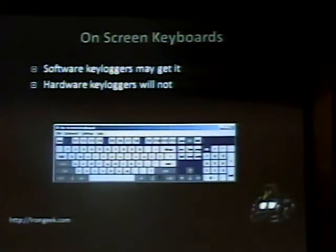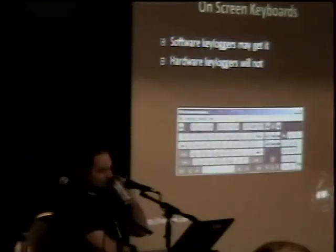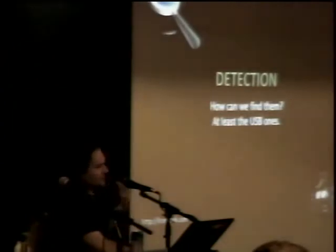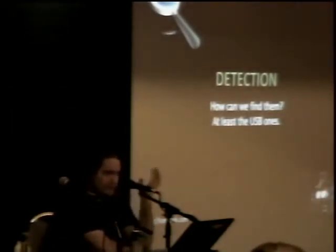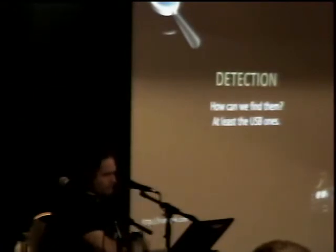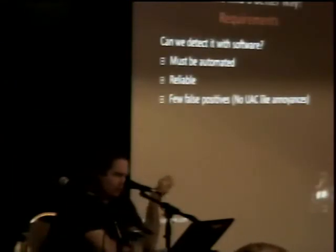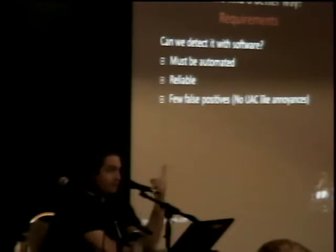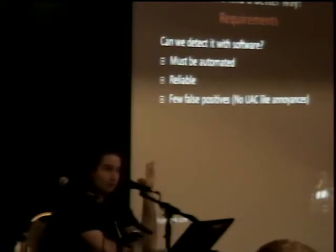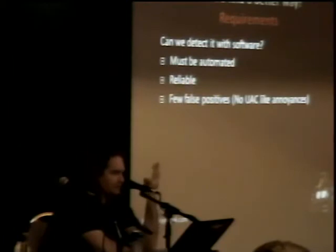The on-screen keyboard: depending on how a software keylogger is designed, it might catch this — but a hardware keylogger will not. Now on to detection. There are some ways to kind of detect USB hardware keyloggers in software. The criteria: it has to be done in software, must be automated, must be reliable with few false positives. If people are constantly getting warnings about USB changes — like what UAC does in Vista — they'll start ignoring it. It needs to be a rare enough event.